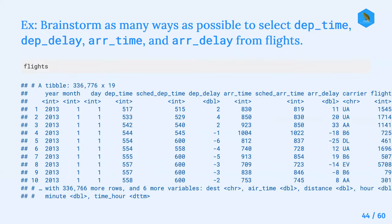This exercise asks us to brainstorm as many ways as possible to select dep_time, dep_delay, arr_time, and arr_delay from the flights dataset - departure time, departure delay, arrival time, and arrival delay.